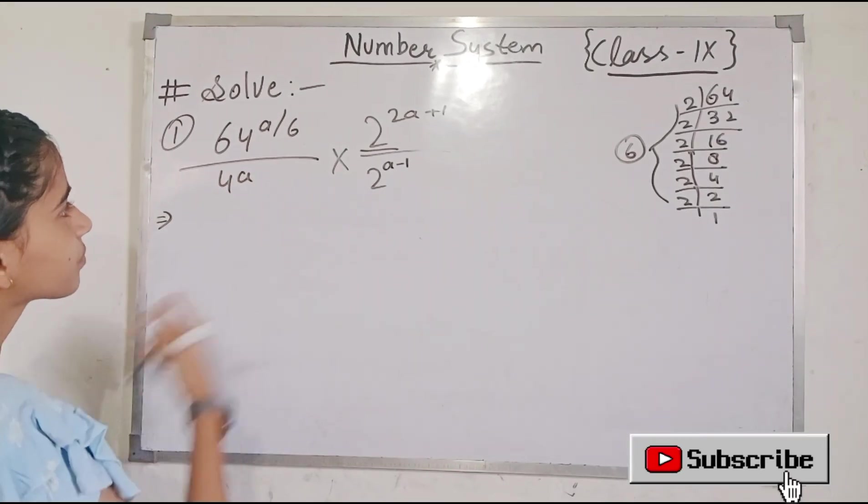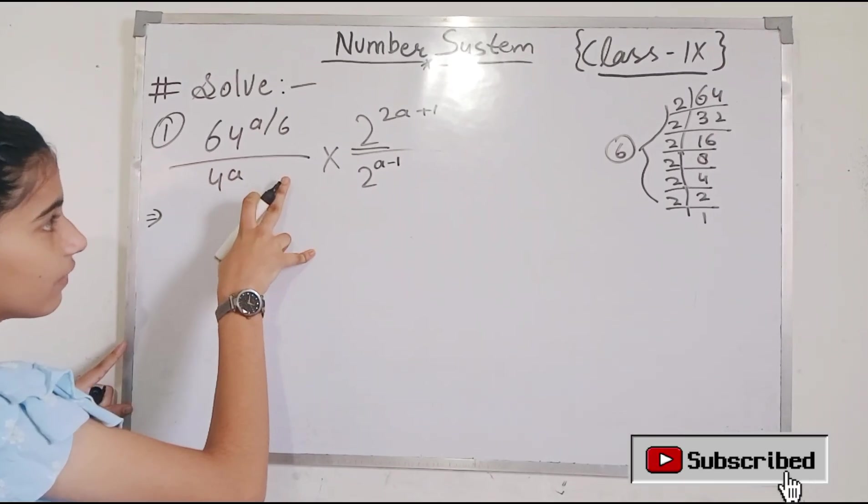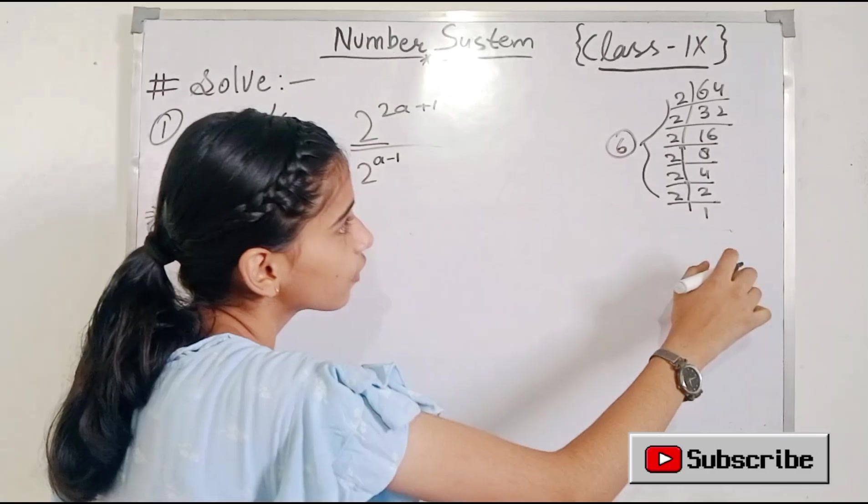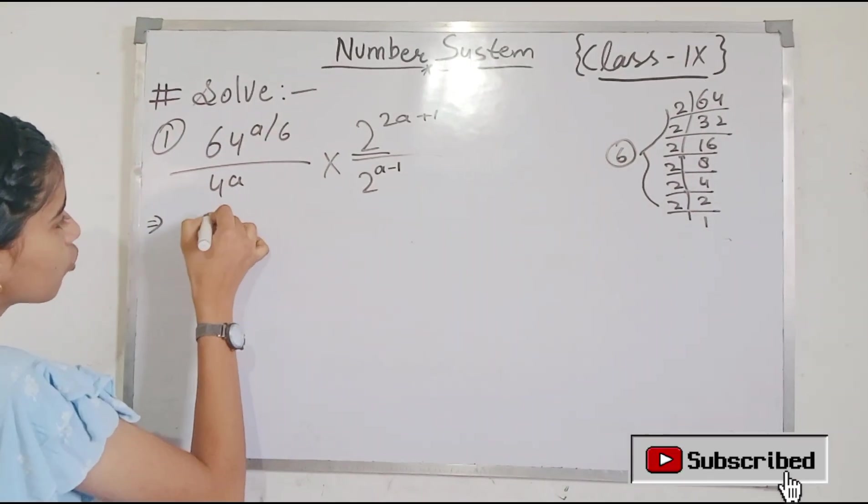So what will we do first? We will find the factors of 64 and 4. So when we will find the factors of 64 we will get this. So we will factor it and we will get 2 is to power 6.